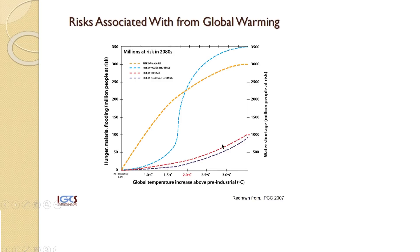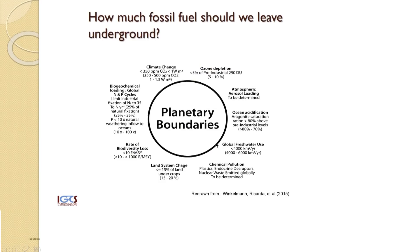Even earlier research from the IPCC — this is a graph from the 2007 IPCC report — shows that beyond 2 degrees of global warming, you have hundreds of millions of people facing dire risks, especially risks of water shortage, risk of malaria, but also coastal flooding and a rise in hunger. These are challenges that have been well known for quite some time, and the real concern is how do we deal with the problem of global warming.